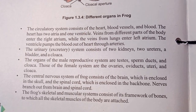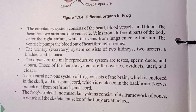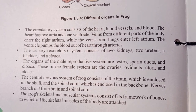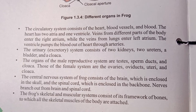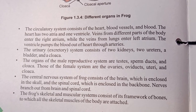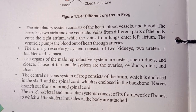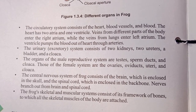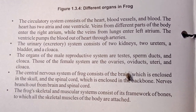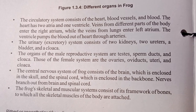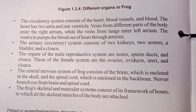The circulatory system consists of the heart, blood vessels, and blood. The heart has two atria and one ventricle. Veins from different parts of the body enter the right atrium, while veins from the lungs enter the left atrium. The ventricle pumps blood out of the heart.